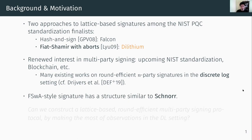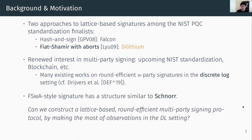Since Fiat-Shamir with abort style signatures have a very similar structure to the Schnorr signing protocol, the natural question is: can we construct a lattice-based, round-efficient multi-party signing protocol by making the most of the observations in the discrete log signing? In our paper, we address this question.